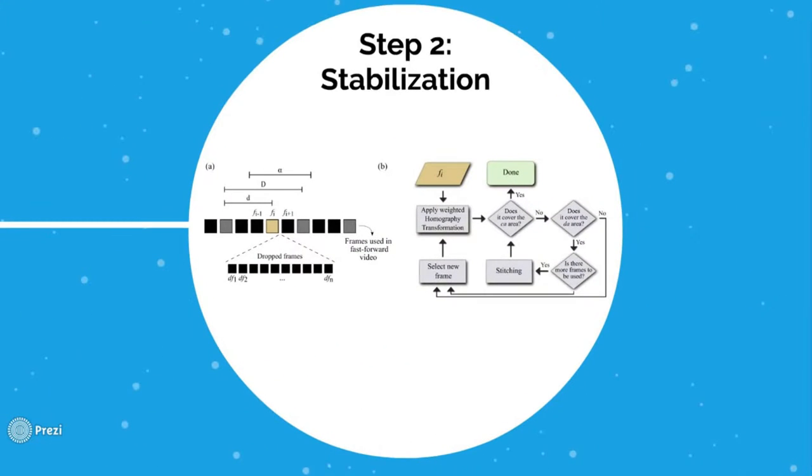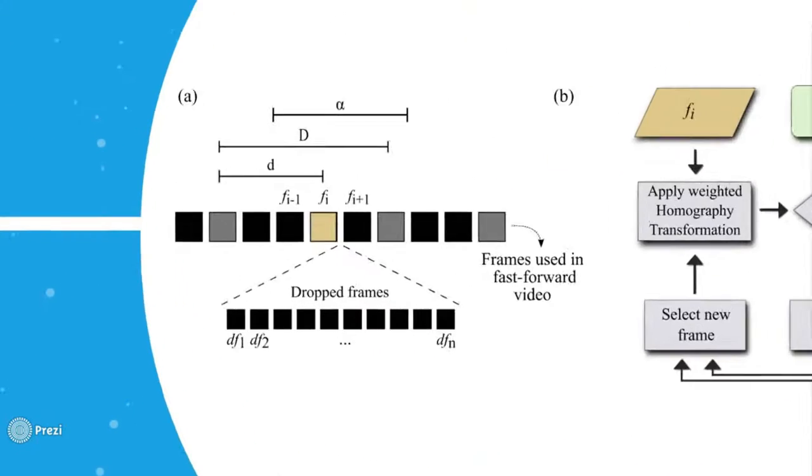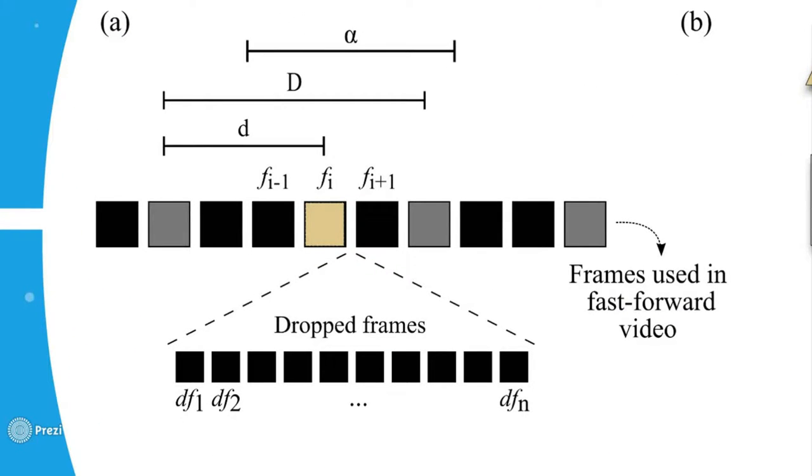In the second step, a stabilization process is applied to the fast-forward output video. The video is divided into patches, each one with its respective master frame. Homography transformations weighted with respect to the master frames are applied to the frames in between.